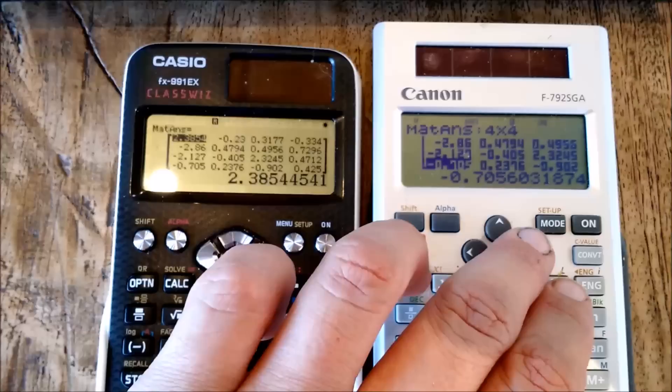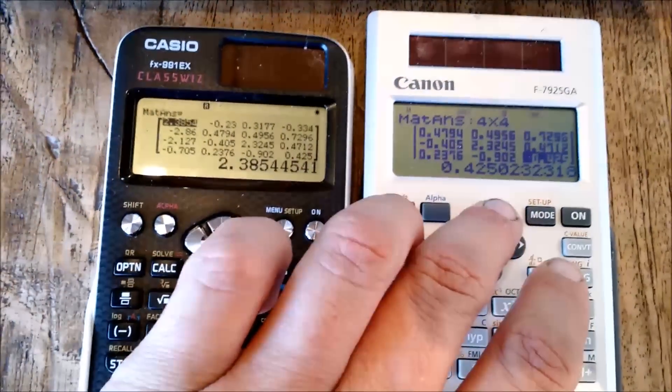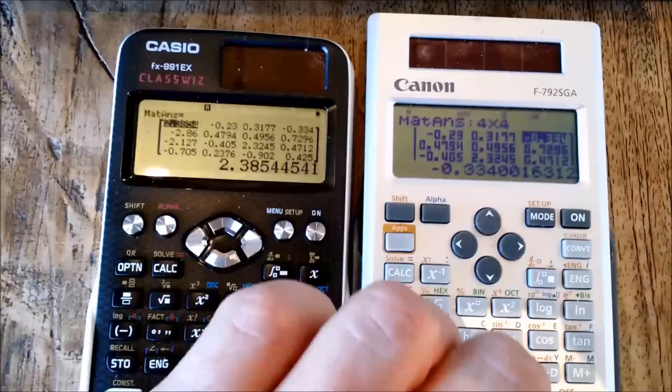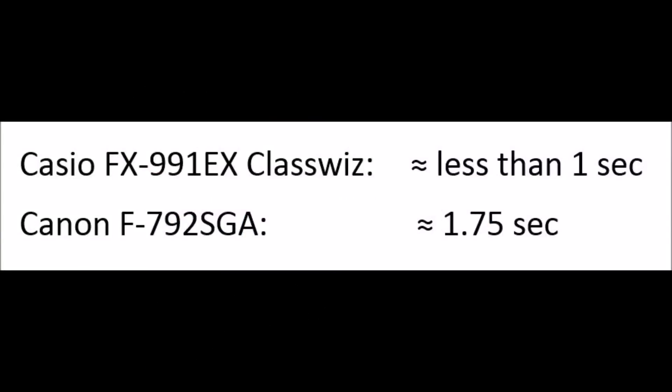The results are pretty spontaneous, very quick, and I'm just scrolling down on the Canon calculator since the font is bigger to show you that we get the same results. As a result, less than 1 second for the Classwiz Casio and 1.75 seconds for the Canon.